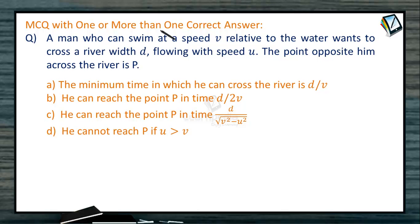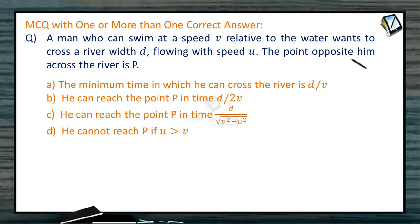MCQ with one or more than one correct answer. A man who can swim at a speed V relative to water wants to cross a river of width D flowing with a speed U. The point opposite him across the river is P.